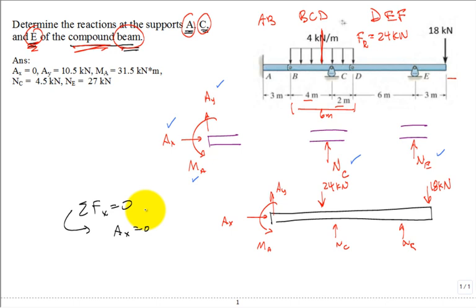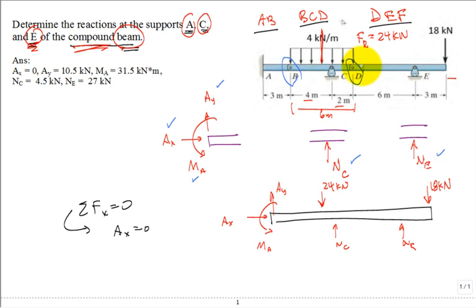We'll draw individual free body diagrams for each member: A-B, B-C-D, and D-E-F. When doing this we must account for the pins at B and D, because they carry internal action-reaction forces — B_x, B_y at pin B and D_x, D_y at pin D.